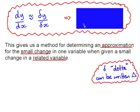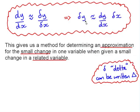Rearranging gives us delta y is approximately equal to dy by dx multiplied by delta x. This gives us a method for determining an approximation for the small change in one variable when given a small change in a related variable.